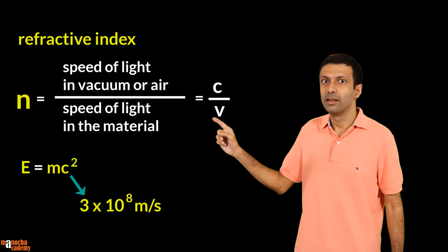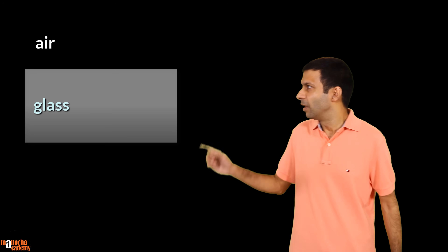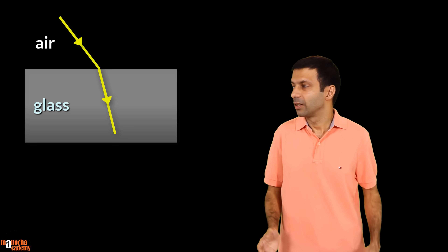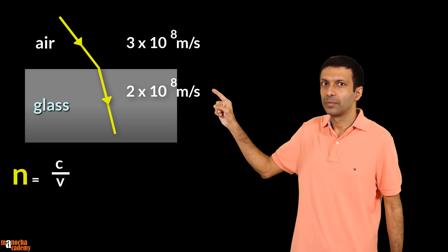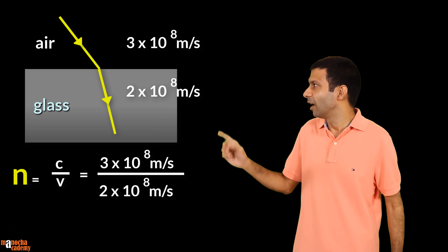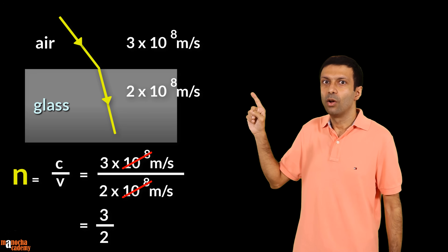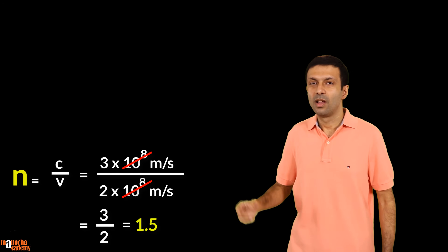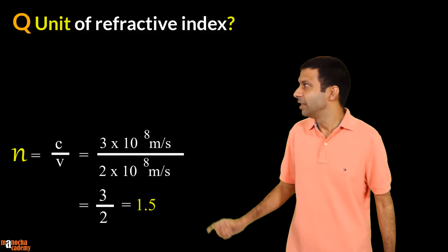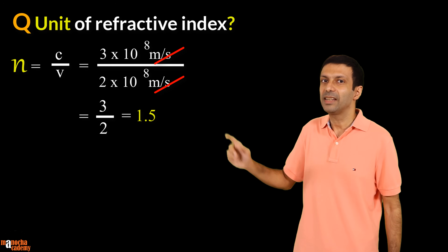Now let's apply this formula and calculate the refractive index of glass. In our example light is traveling from air to glass, so the refractive index of glass is the speed of light in air divided by the speed of light in glass. Putting in the values, we get the refractive index of glass as 3/2 or 1.5. Now what is the unit of refractive index? It has no units since it's a ratio of speeds, so the unit meter per second gets cancelled out.